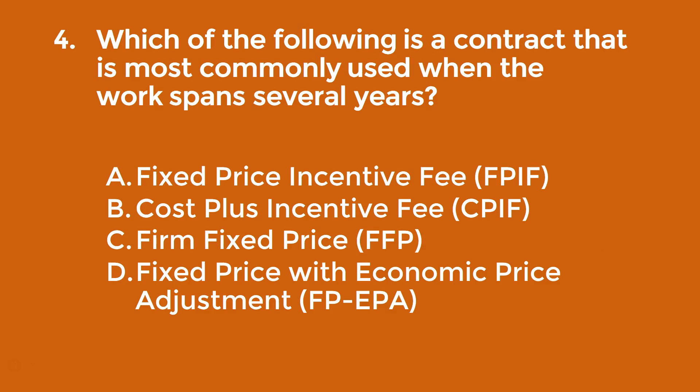Question four: which of the following is a contract most commonly used when the work spans several years? The correct answer is D — fixed price with economic price adjustments. In these contracts, payments may change over time to align with some reliable financial index, which is one of the reasons why it's useful when the work spans several years.